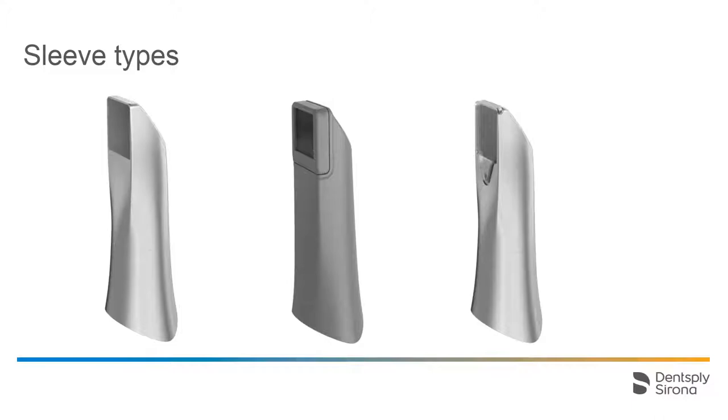There are three different types of sleeves in total. On the left you can see the stainless steel sleeve with sapphire glass. In the middle is the disposable sleeve that is discarded after each patient use. And on the right we have the autoclavable sleeve with a disposable window.